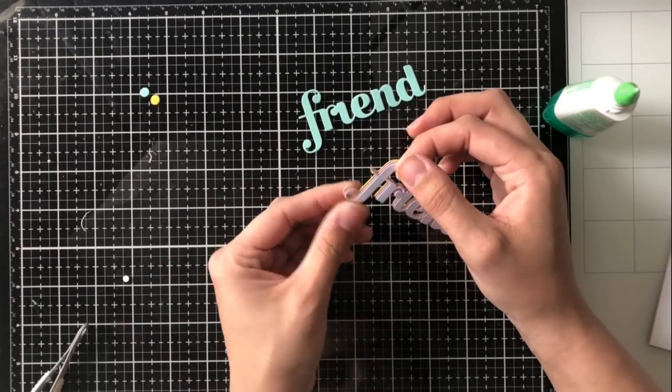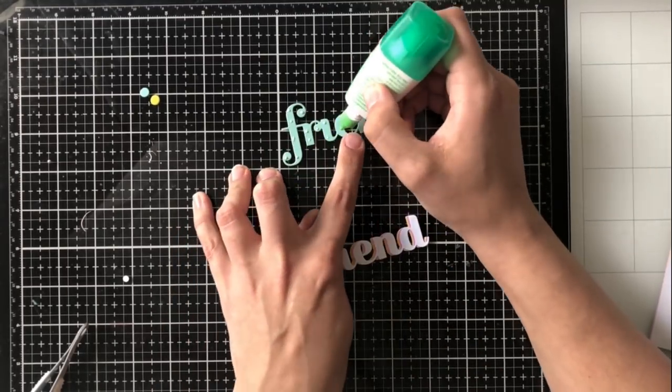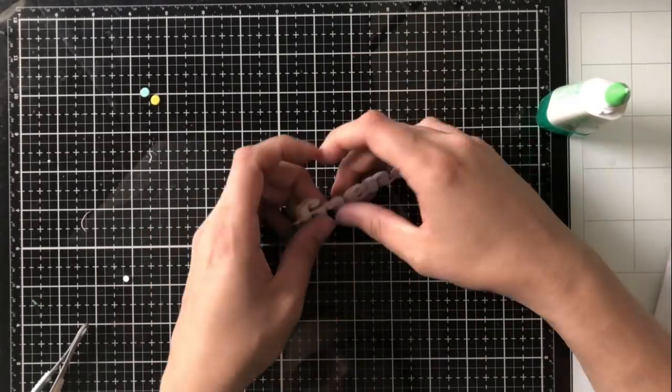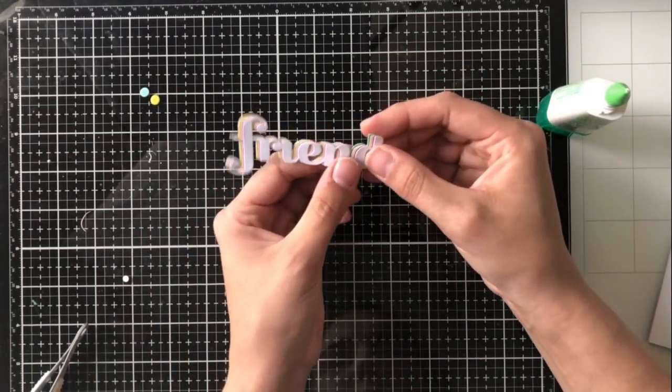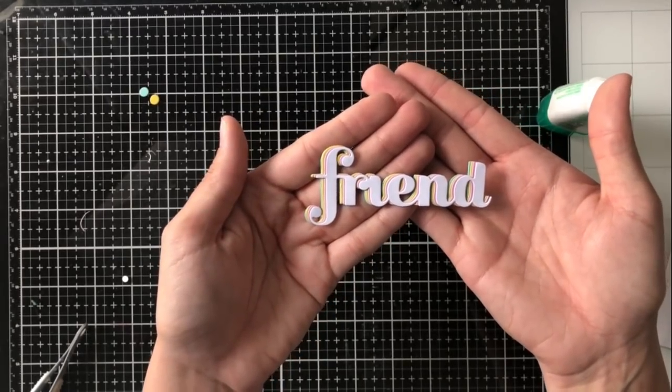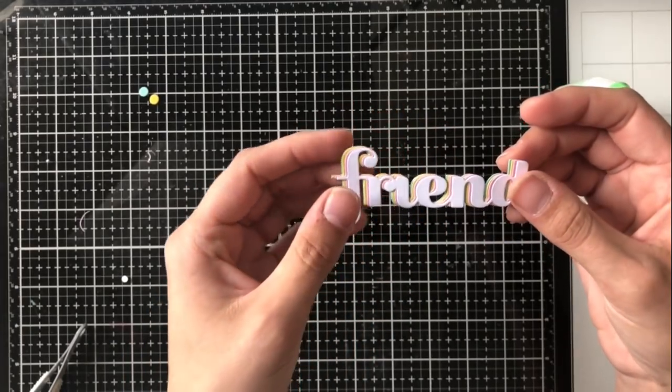So we're going to end up with sort of this like trippy looking word die, and it's going to have lots of colors in it. And we're going to end up making a really nice, clean and simple card with a little bit of pattern paper. And it's always great when you're able to use pattern paper because we all have tons of it.